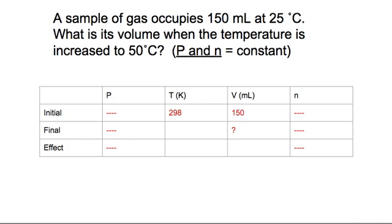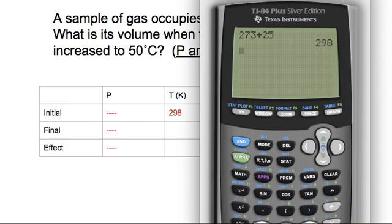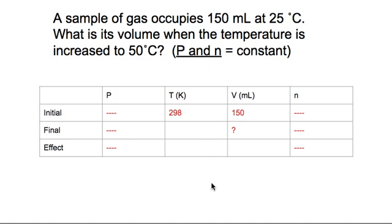The other thing that I want to do now is I want to enter what is my final temperature. It says the temperature increases to 50 degrees C, so let's calculate that by taking 273 and we're going to add that to 50, which gives us 323. So our final temperature is 323.